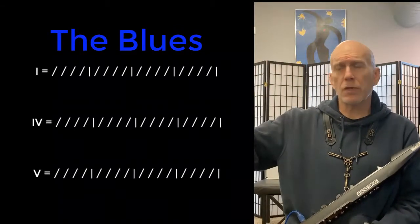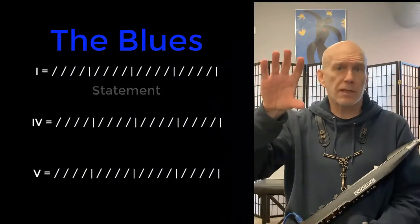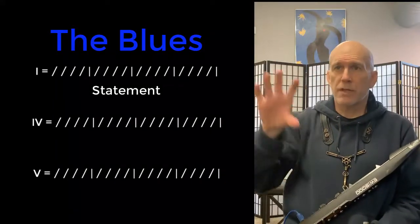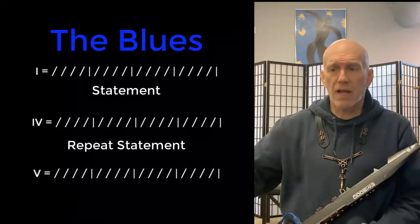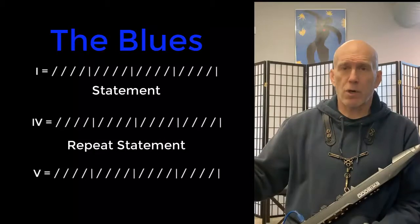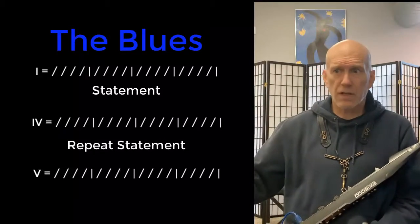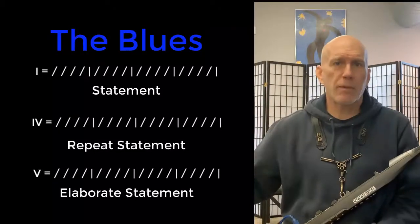If we listen to a blues tune, during the first four bars, like that functions as a one chord, they normally lyrically make a statement. Then during the second four bars that functions as a four chord they normally repeat the statement, and then in the last four bars which functions as a five chord they elaborate upon the statement.